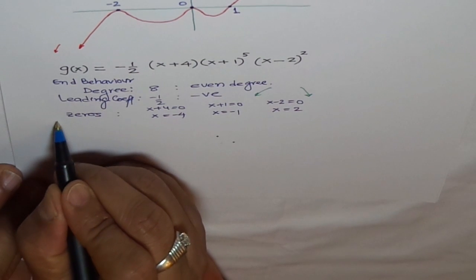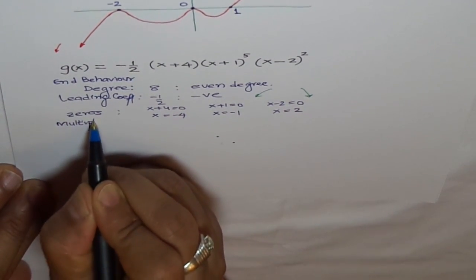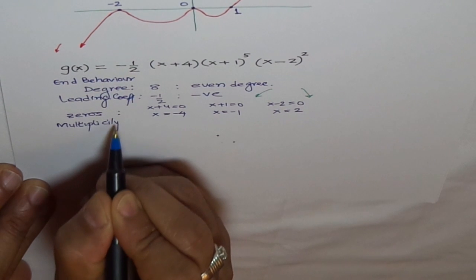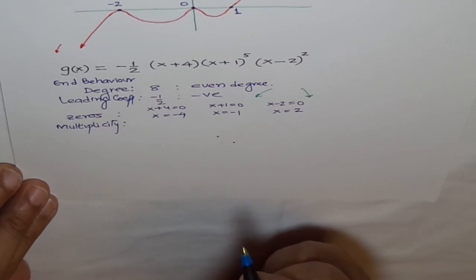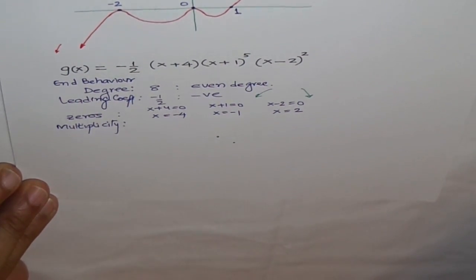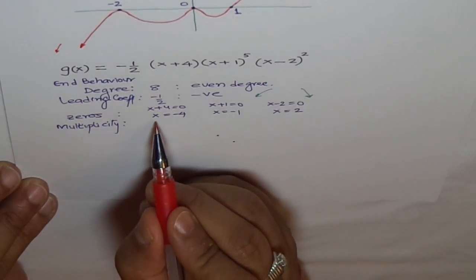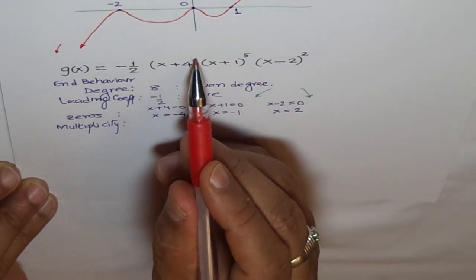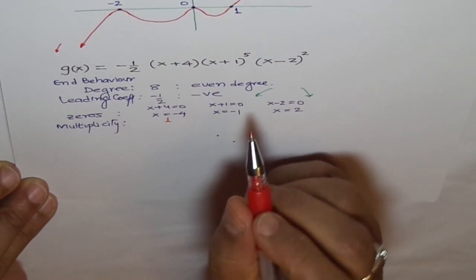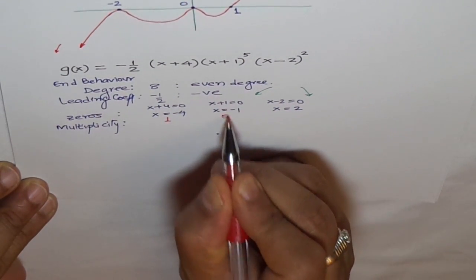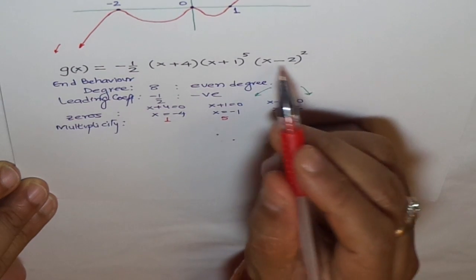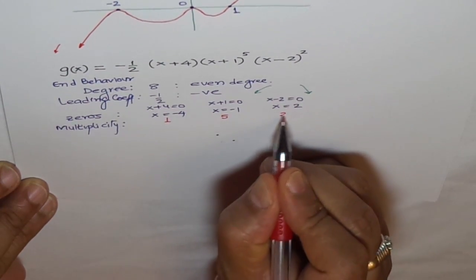Now let's look into multiplicity. Multiplicity for x equals minus 4 is 1. At x plus 1, this multiplicity is 5. And at 2, it is 2.